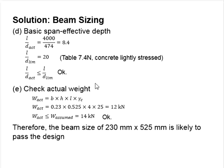There is one more item that you need to cross-check. At the initial stage, we assume that the weight of the beam is 14 kN. We need to calculate the actual weight of the beam by using the volume multiplied by the unit weight of the concrete. In this case, the actual weight of the concrete is 12 kN, which is smaller than the assumed load of 14 kN. Therefore, the assumption is valid.